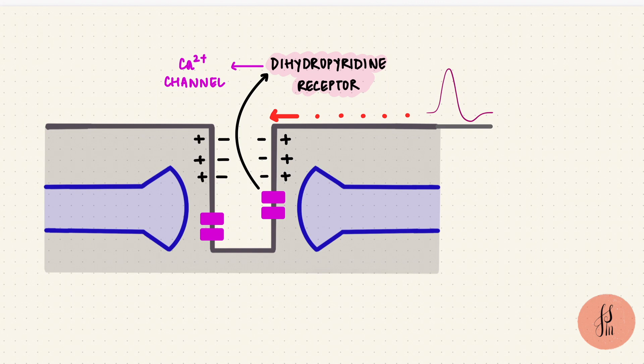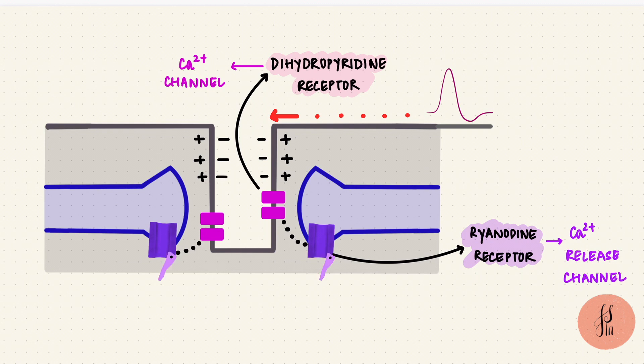But rather than letting calcium ions in, it's more important here as a sensor. That's because this receptor is mechanically coupled with another channel on the terminal cistern. That's called the ryanodine receptor, which is a calcium release channel. So this channel opens as well, and once it opens, calcium ions leave the sarcoplasmic reticulum to enter the sarcoplasm, increasing the concentration of intracellular calcium.